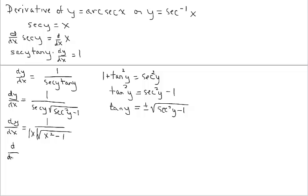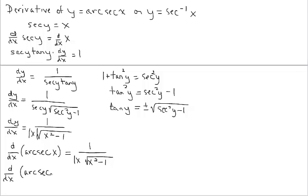The derivative of arc secant of x equals the formula we derived. Considering that we'll likely be differentiating composite functions, we accommodate by substituting u: the derivative of arc secant is 1 over absolute value of u times the square root of u squared minus 1, multiplied by du over dx from the chain rule. You can derive all three formulas necessary to find derivatives of the inverse trig functions. Now let's look at some examples.